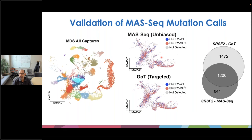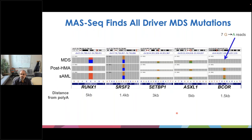We see a large proportion of cells genotyped by both assays. The major difference is that MOS-Seq is unbiased and not targeted, allowing it to look at more mutations than those available with targeted approaches. We are able to detect other mutations in this patient — namely RUNX1, where the mutation is 5 kb from the poly-A site, something not detectable with a standard 10X library using NovaSeq. We're also able to detect rare mutations in CEBPA, ASXL1, and BCOR, which emerges post-therapy.